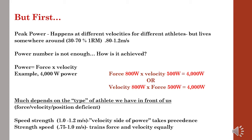We have to realize that peak power happens at different velocities for different athletes, but lives somewhere around 30 to 70% of a one rep max, or if we're using VBT, 0.80 to 1.2 meters per second. But just getting a power number is not enough — it's how it's achieved that's important. Power equals force times velocity. So if an athlete is creating 4,000 watts of power, this could be coming from 800 units of force and 500 units of velocity, or the reverse, and both give us 4,000 watts of power.